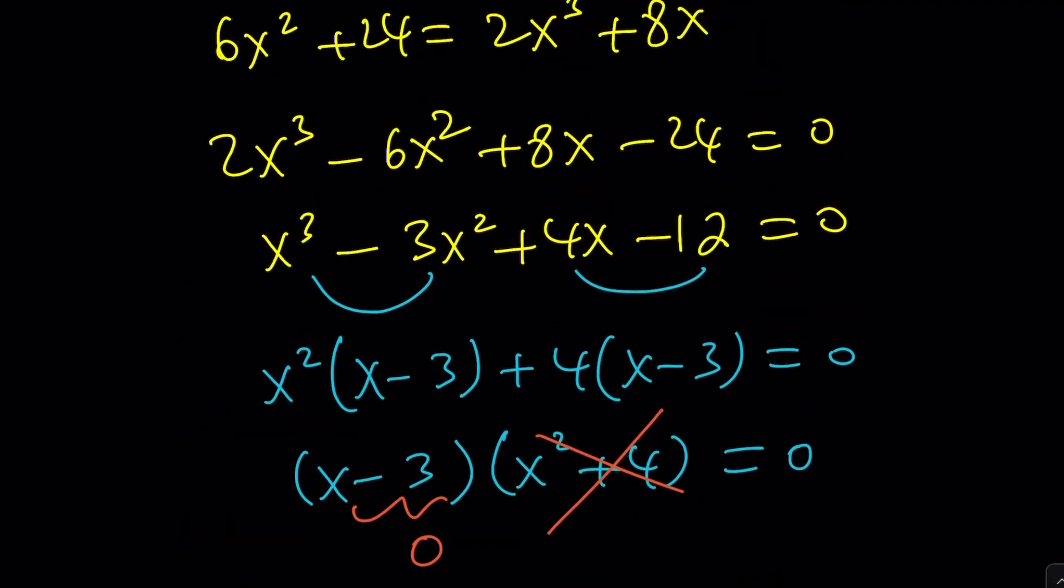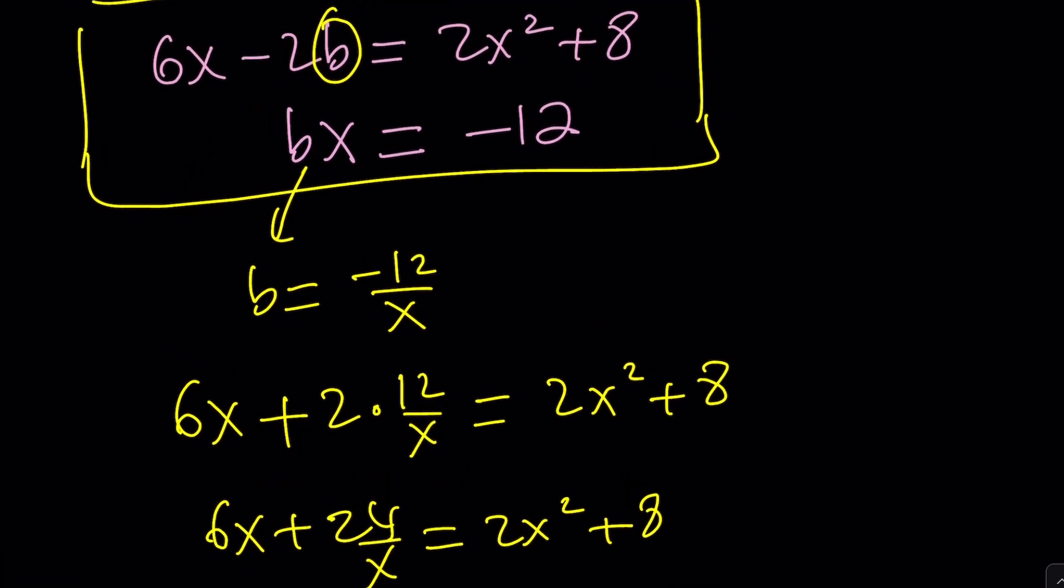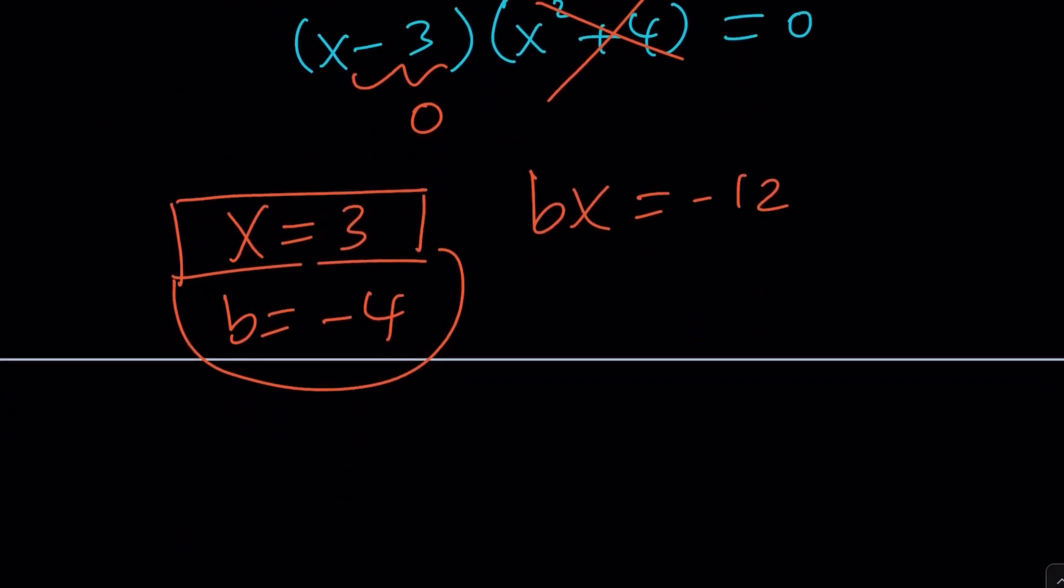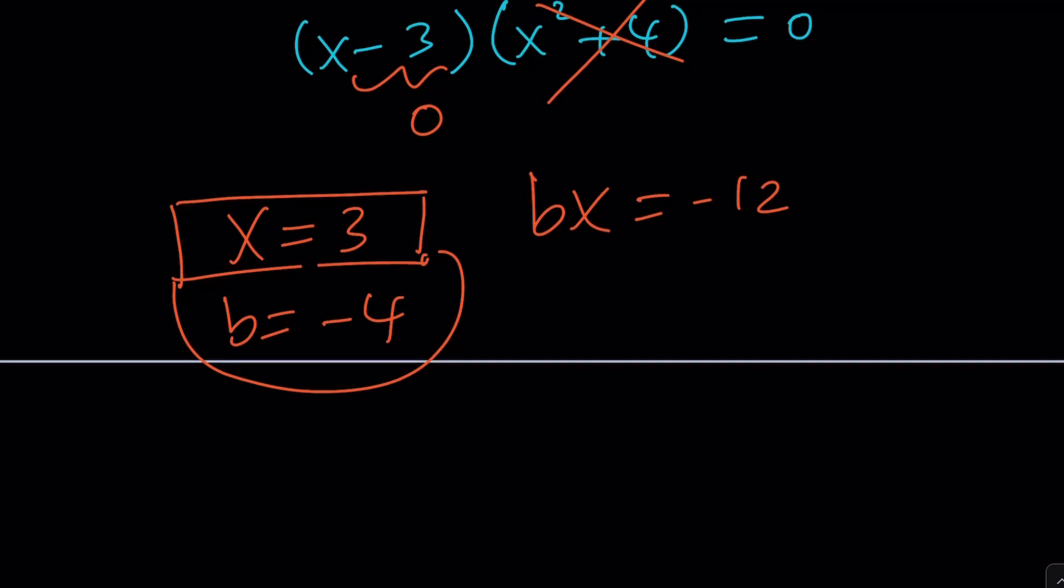Now what would happen if we isolated x instead? We would get negative 12 over b, and then we would plug it in. We would get a cubic equation that would be cubic in b. Doesn't matter, about the same level of difficulty. So this was the first method, we just cross-multiplied.